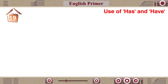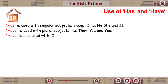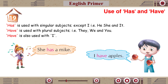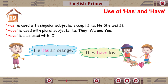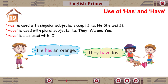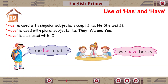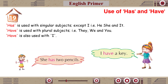Chapter 19: Use of Has and Have. Has is used with singular subjects — He, She and It. Have is used with plural subjects — They, We and You. Have is also used with I. She has a mic. I have apples. She has balloons. You have a doll. He has an orange. They have toys. She has a hat. We have books. She has two pencils. I have a key.